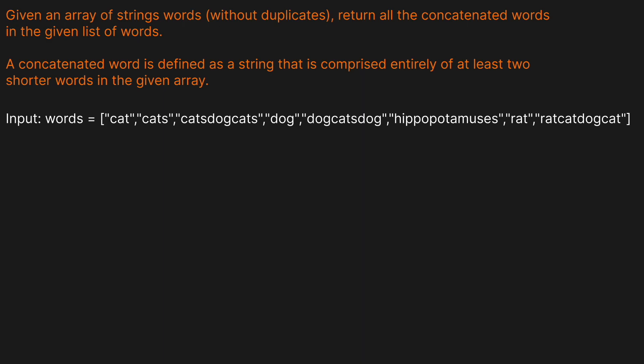Given an array of strings words without duplicates, return all the concatenated words in the given list of words. A concatenated word is defined as a string that is comprised entirely of at least two shorter words in the given array.